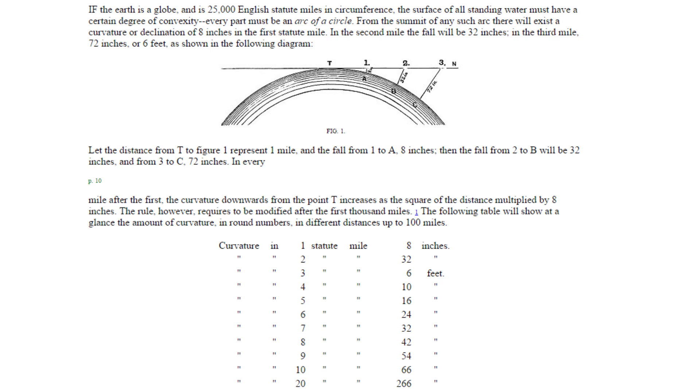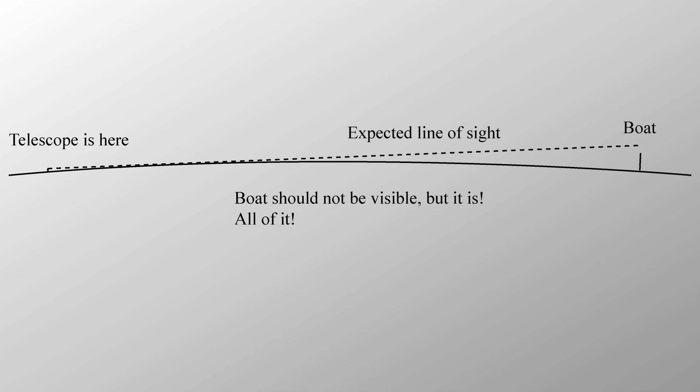He calculated that if the Earth was a 6400 kilometer radius sphere, as it is described, then a horizontal distance of 8 kilometers, 5 miles, corresponds to a drop of 5 meters, 16 feet. Yet he could see a 1.5 meters tall boat, all of it, at that distance. Well, here's the problem, known to land surveyors even at the time.